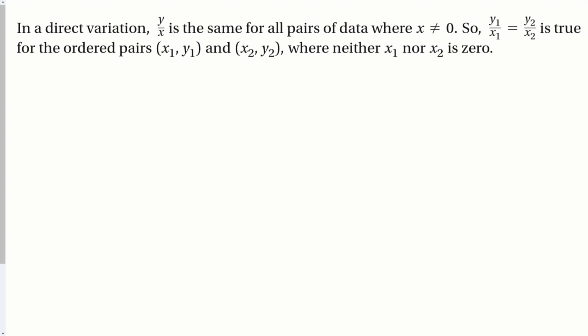In direct variation, y over x is the same for all pairs of data, except for when x equals 0. As long as x doesn't equal 0, y over x will always be the same, which is the definition of direct variation. It's constant. So that means for different points (x1, y1) and (x2, y2), this ratio of y1 over x1 is always going to equal y2 over x2. As long as it's direct variation, if you take a y divided by the x in the same point, you're always going to get the same ratio.